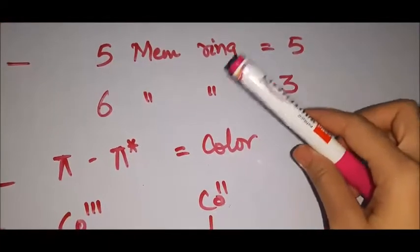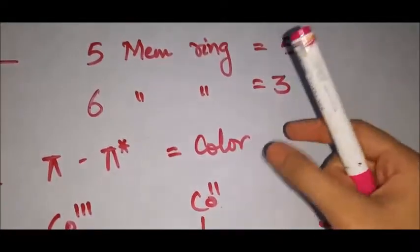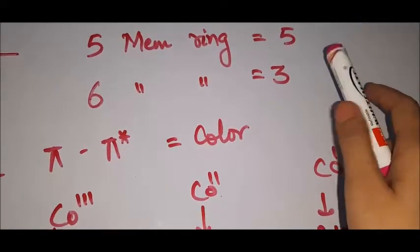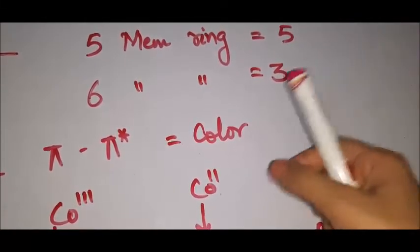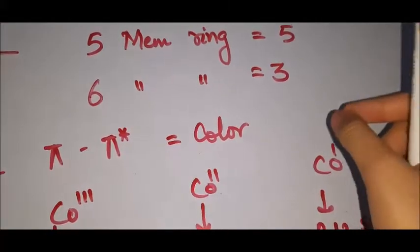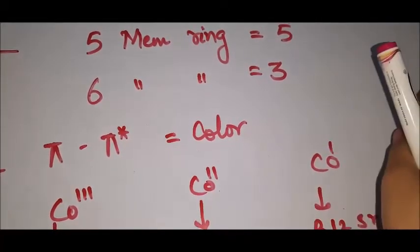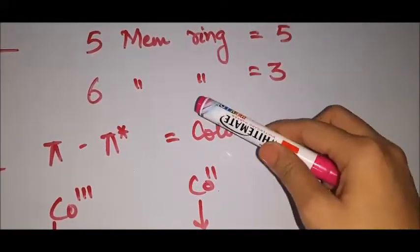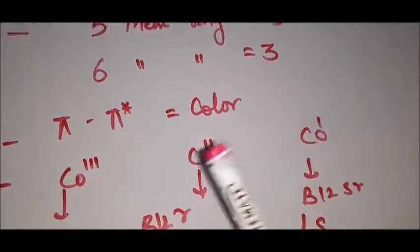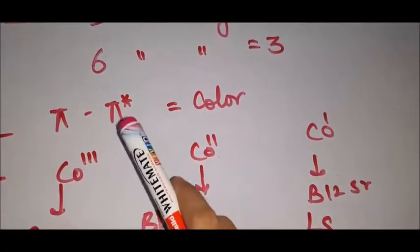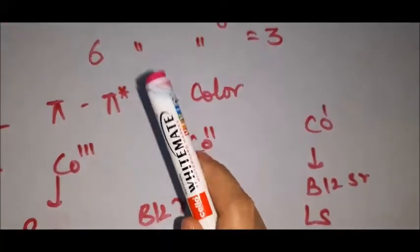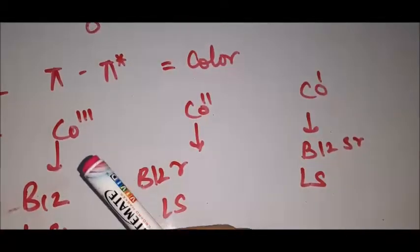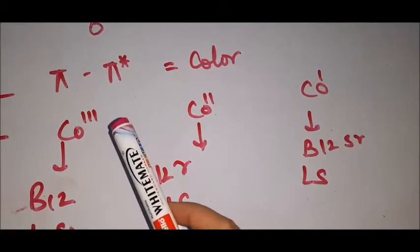An important structural point: the 5-membered ring and 6-membered ring counts differ between the corrin and porphyrin rings. The color observed is due to pi to pi* transition. Remember which color corresponds to ligand-to-metal charge transfer and which corresponds to pi to pi* transition.